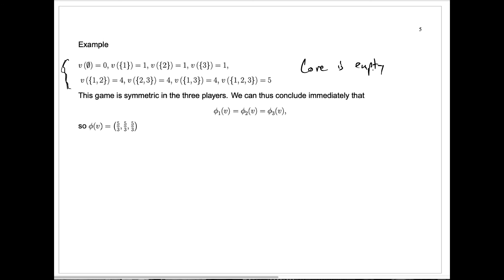Now even though the core is empty, we still need to have some idea of what a fair payoff vector might be. Here it's going to be relatively easy because this characteristic function for this game in coalitional form has a very simple property of symmetry. Each player plays an entirely symmetric role.